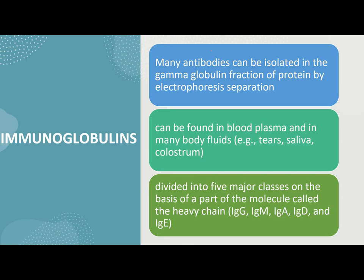Many antibodies can be isolated in the gamma globulin fraction of protein by electrophoresis separation. Your antibodies are specifically plasma proteins and they belong to the gamma globulin fraction, which can be separated through electrophoresis. They can be found in blood plasma and in many body fluids such as your tears, saliva, and colostrum. They are not only found in the plasma but also in these body fluids.